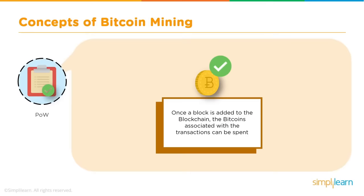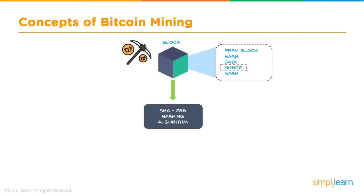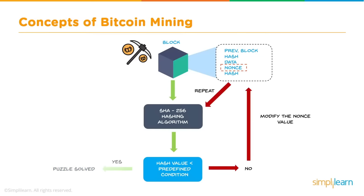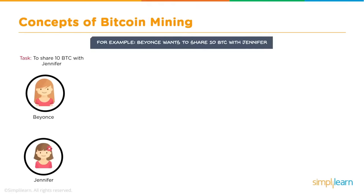To generate the hash, you use the SHA-256 hashing algorithm. You define the hash value — if it is less than the target (the predefined condition), the puzzle is deemed solved. If not, you keep incrementing the nonce value and repeat the SHA-256 hashing function, generating the hash value again, until you get a hash value less than the target. For example, Beyoncé wants to share 10 Bitcoin with Jennifer. Her transaction data is shared with Bitcoin users — the miners — from the memory pool.